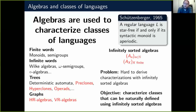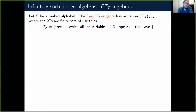Let's look at an algebra we call FT-Sigma algebras, where sigma is some alphabet. This algebra describes finite trees. The free tree algebra has carrier sets T_X for all X, where X is a finite set of variables. T_X is the set of all trees in which all the variables of X appear on the leaves.